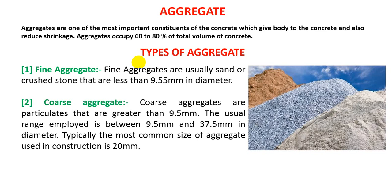Typically, the most common size of aggregate used in construction is 20 mm. The 20 mm aggregate is the most usually usable size in concrete.